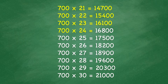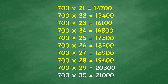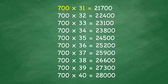700 times 24 equals 16,800. 700 times 25 equals 17,500. 700 times 26 equals 18,200. 700 times 27 equals 18,900. 700 times 28 equals 19,600. 700 times 29 equals 20,300. 700 times 30 equals 21,000. 700 times 31 equals 21,700.